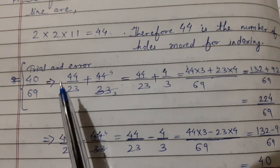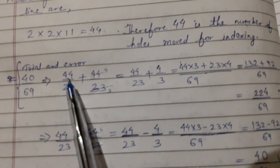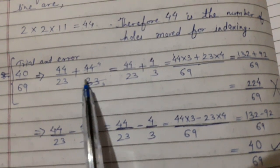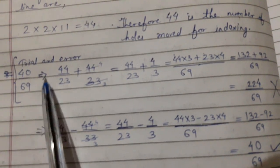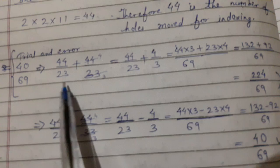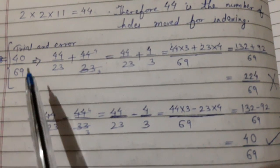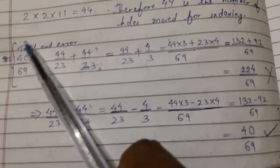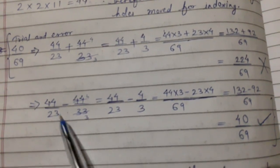So now what we have to do is trial and error. We want 40 upon 69, and we have got small n1 as 44 and capital N1 as 23, small n2 as 44 and capital N2 as 33. First we will add and then we will subtract to see if we get 40 divided by 69. This we are doing because the formula says plus or minus. So whether plus is suitable or minus is suitable, we will check. Once we check with plus it is coming 224 upon 69, which is not matching with this. And when we took minus it is coming 40 upon 69, which is correct.